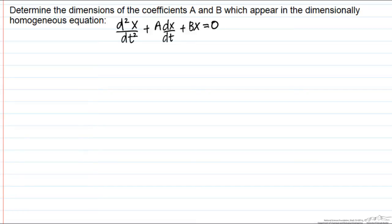In this screencast, we're going to determine the units of coefficients that we're going to call A and B that appear in a dimensional homogeneous equation. However, this is a little different than others that you may have seen since we're going to look at a differential equation.